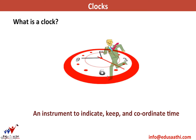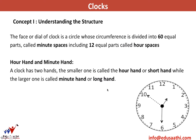The first question is: what is a clock? It's an instrument to indicate, keep, and coordinate time. Now let's understand the structure of a clock. The face or dial of a clock is a circle whose circumference is divided into 60 equal parts. Between 12 and 1, for example, there are 5 parts, and there are 12 such divisions, so 5 × 12 = 60 equal parts, which are also called the minute spaces.